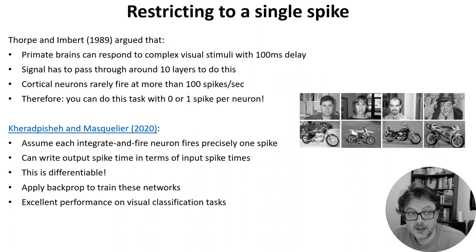And they found that this gave excellent performance at the same types of visual classification tasks that Simon Thorpe had earlier studied in primates. For example they could very reliably distinguish between faces and motorcycles in this data set.